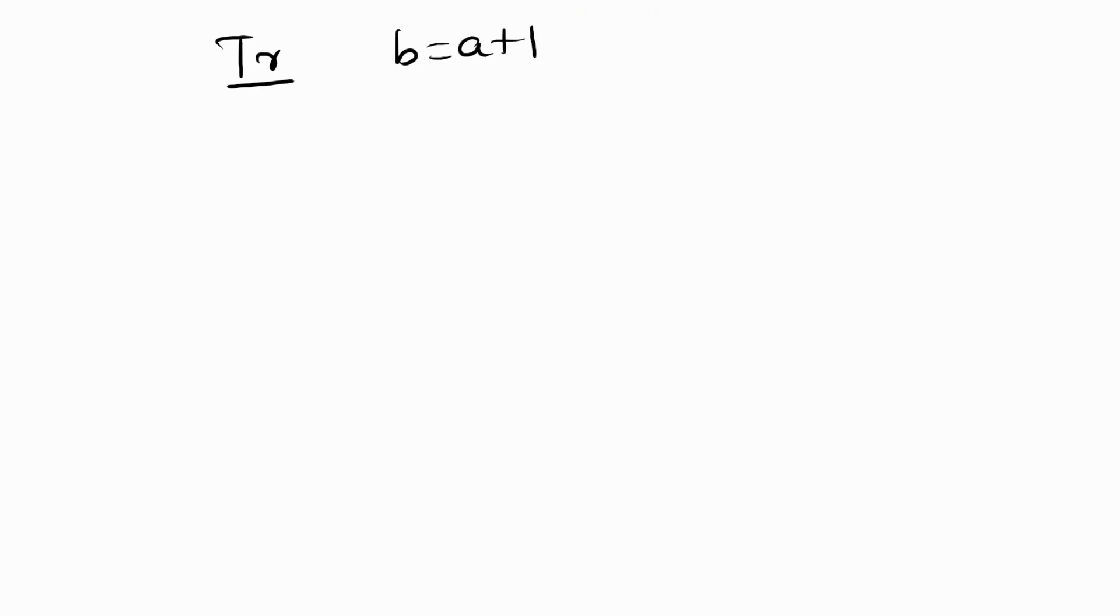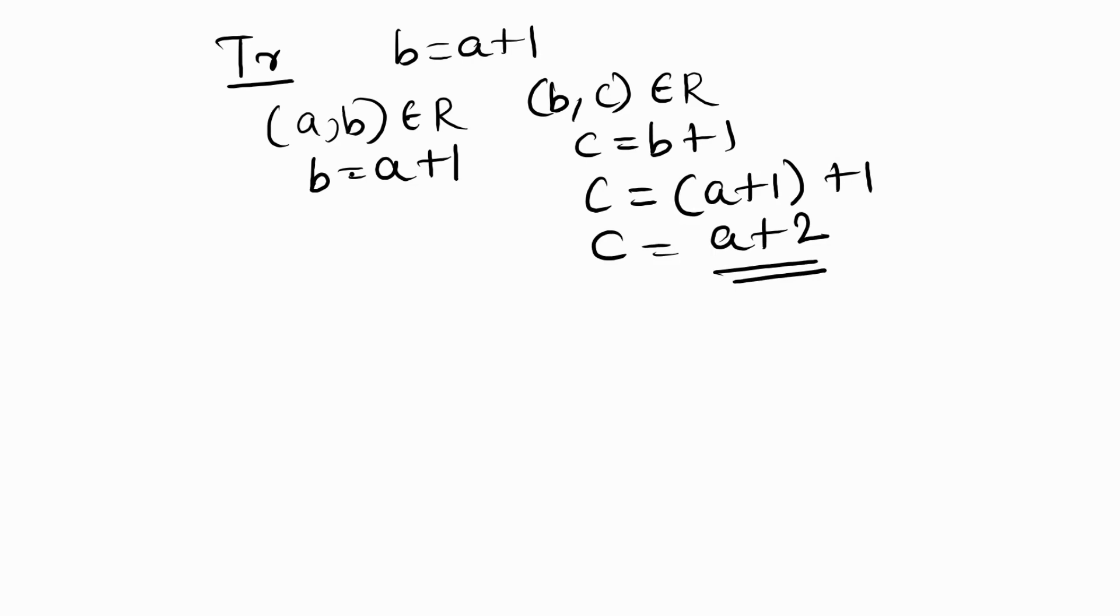The transitive condition: (a,b) belongs to R means b equal to a plus 1. Now (b,c) belongs to R means c equal to b plus 1. So c is equal to a plus 2. Now for (a,c) to belong to R, we need c equal to a plus 1, but c is already a plus 2. So this condition is failed. This is not transitive.